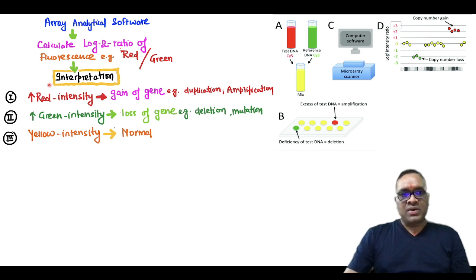We will have interpretation like this: if you find more red intensity, that means there is a gain of gene which is due to duplication or amplification. Now you can see on the array chip there is a red color, so red color means gain of gene which is because of duplication or amplification.